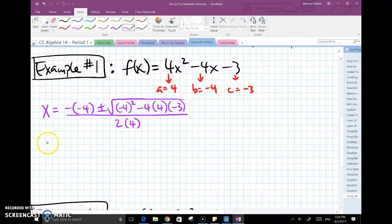So this now becomes a positive 4 plus or minus. This is 16. And if you multiply negative 4 with 4, that would be negative 16. A negative 16 times negative 3 would be positive 48.